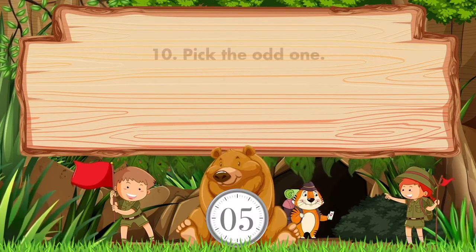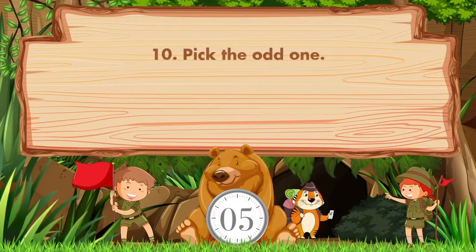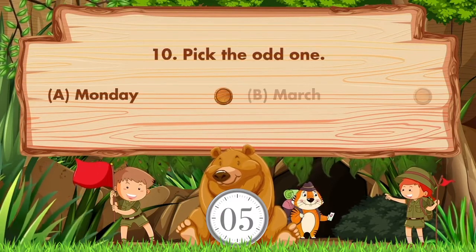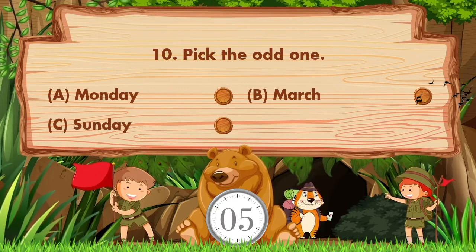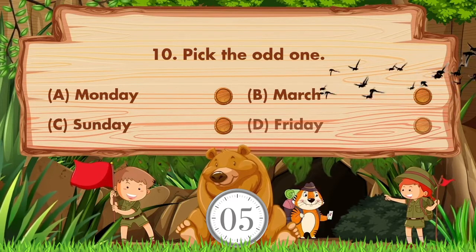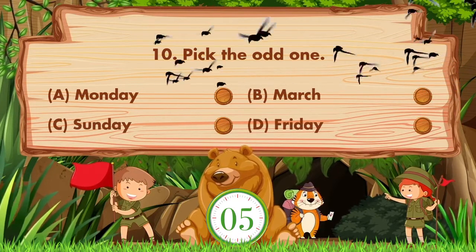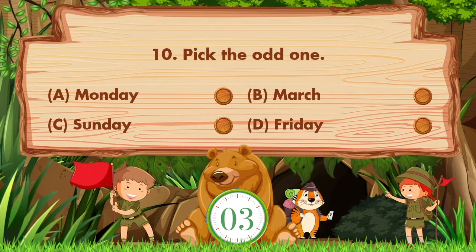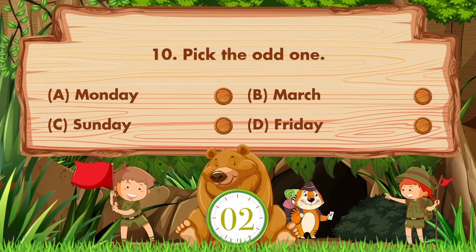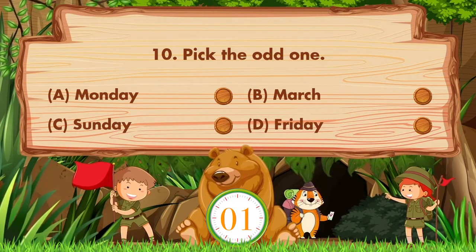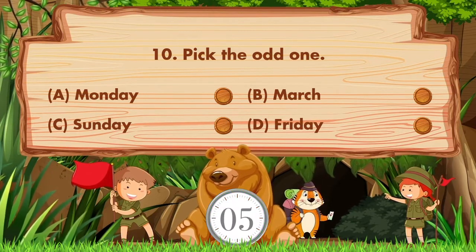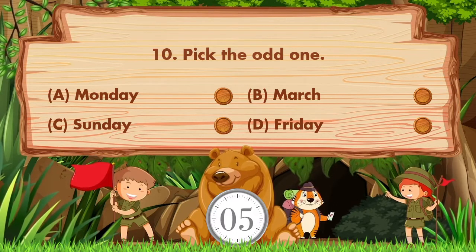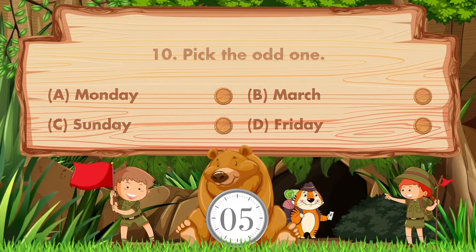Pick the odd one out. Option A: Monday, B: March, C: Sunday, D: Friday. Sorry, we don't know the answer — if you know the answer, then like the video!